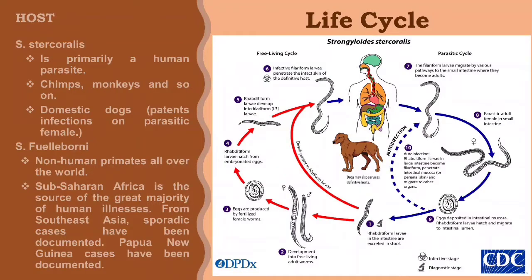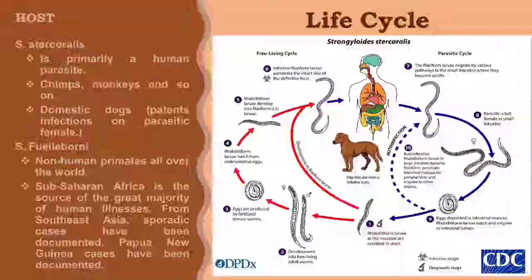In non-human primates all over the old world, Strongyloides fuelleborni subspecies fuelleborni is found. Sub-Saharan Africa is the source of the great majority of human illnesses. From Southeast Asia, sporadic cases have been documented. Papuan cases have also been documented.